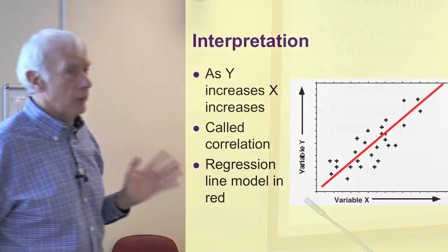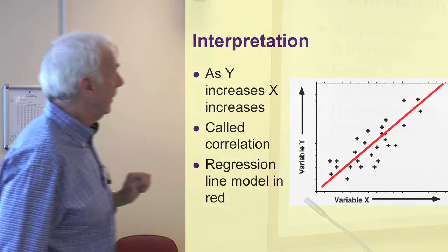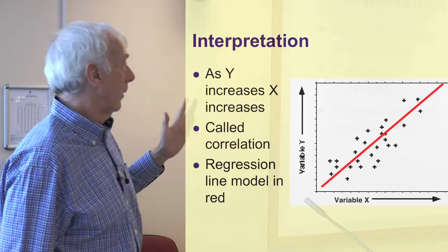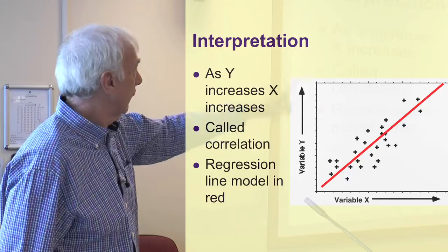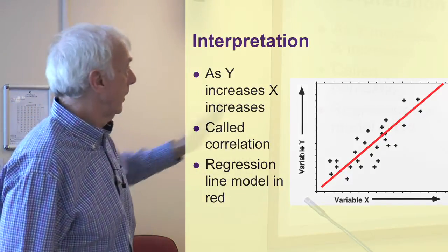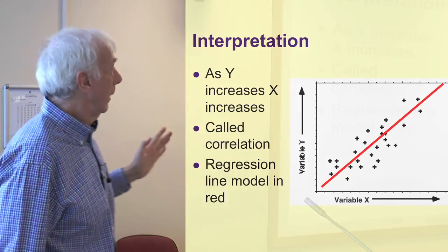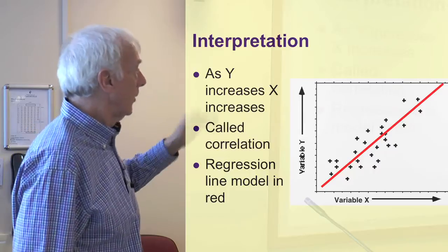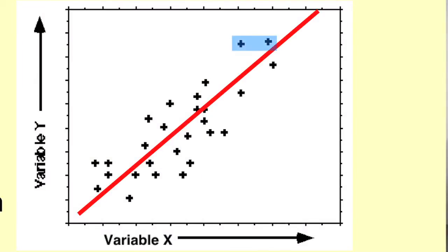Here's an example of interpreting a scatter plot — a much nicer, made-up one. Variable Y is on the up-down axis and variable X is across the base. There's a series of points going from bottom left to top right. The red line is the best fit — the regression line — but not every point is exactly on that line, so we don't have a perfect relationship. Some people have the same value on variable Y but different values on variable X, and vice versa.